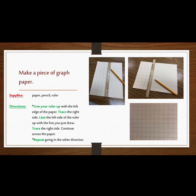Directions: Line your ruler up with the left edge of the paper. Trace the right side of the ruler. Line the left side of the ruler up with the line you just drew. Trace the right side of the ruler again. Continue this across the paper. Then you will repeat going in the other direction.